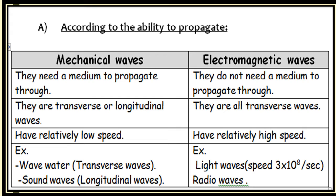Mechanical waves need a medium to propagate through. They can be transverse or longitudinal and have relatively lower speed — examples include water waves and sound. They need a medium such as solid, liquid, or gas. Electromagnetic waves don't need a medium to propagate. They are transverse waves with relatively high speed — examples include light waves and radio waves. They can reach us without any material medium.